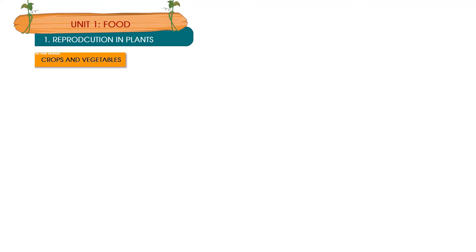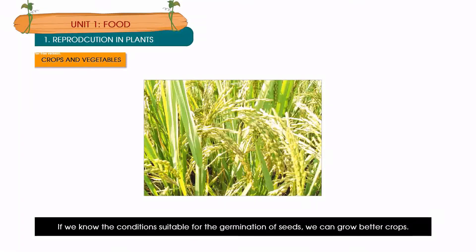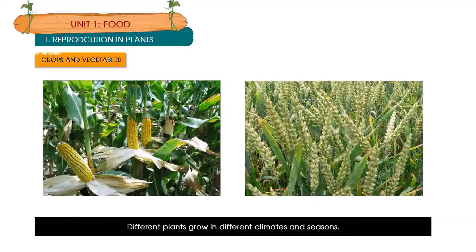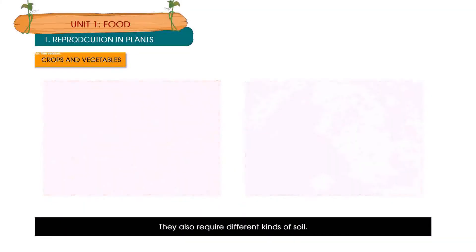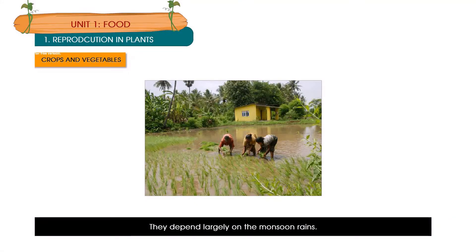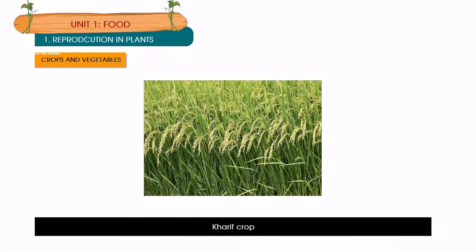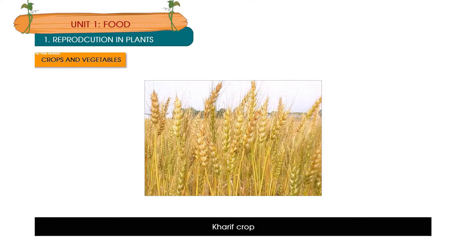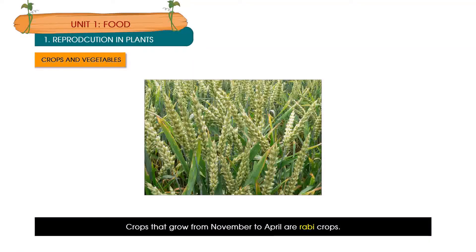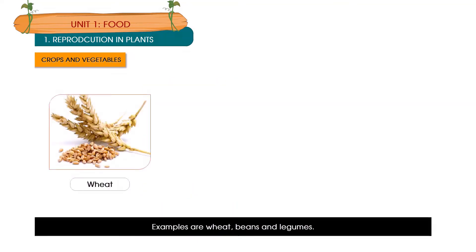The plants of the same kind grown in a particular area at a particular time are called crops. If we know the conditions suitable for the germination of seeds, we can grow better crops. Different plants grow in different climates and seasons and require different kinds of soil. Crops that grow from June to October are kharif crops — they depend largely on the monsoon rains; examples are paddy and maize. Crops that grow from November to April are rabi crops — they do not depend on monsoon rains; examples are wheat, beans and legumes.